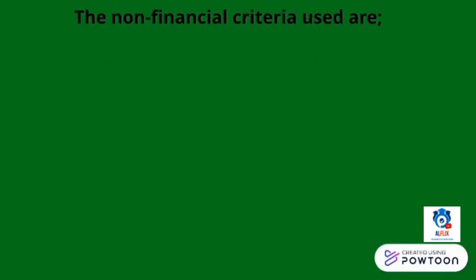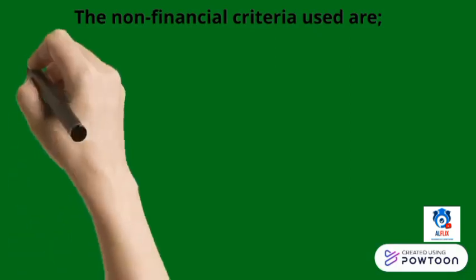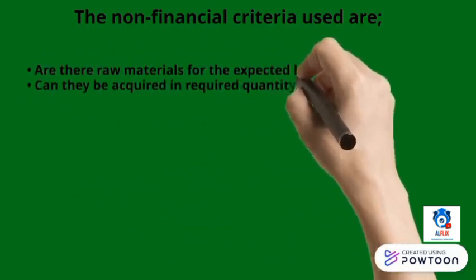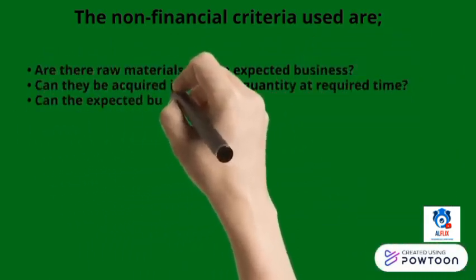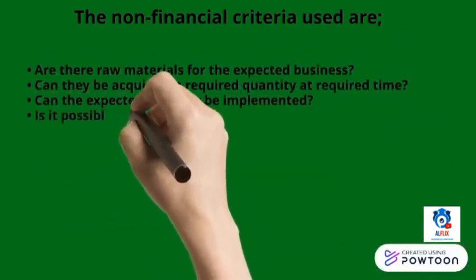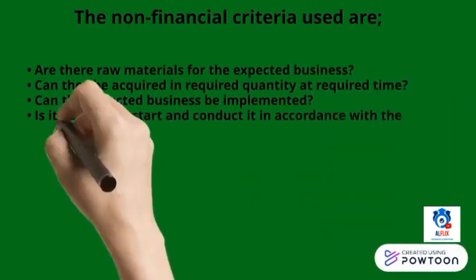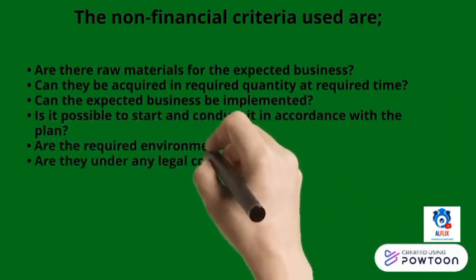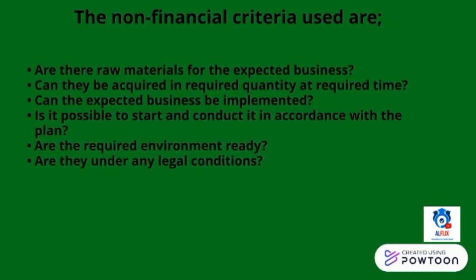The non-financial criteria used are: Are there raw materials for the expected business? Can they be acquired in the required quantity at the required time? Can the expected business be implemented? Is it possible to start and conduct it in accordance with the plan? Are the required environments ready? Are they under any legal conditions to fulfill upfront and also going forward when the business activities are carried out?